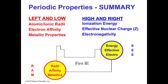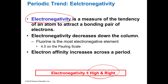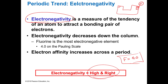Electronegativity is high and right. If you look at your periodic table, disregarding helium and hydrogen, the element up in that top-right corner is fluorine, and fluorine is the most electronegative element there is. The electronegativity of fluorine is 4.0 — which is kind of funny because a 4.0 is an A average, but a perfect electronegativity is an F. That might help you remember it.